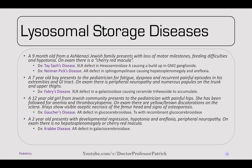A 12-year-old girl from a Jewish community presents with painful hips, and has been followed for anemia and thrombocytopenia since birth. On exam, there are yellow-brown discolorations on the sclera. X-rays show aseptic necrosis of the femoral head and signs of osteoporosis — this is Gaucher's disease. It's an autosomal recessive defect in glucocerebrosidase, and treatment is recombinant glucocerebrosidase.